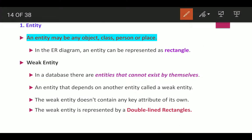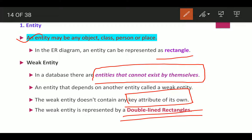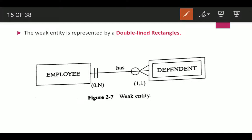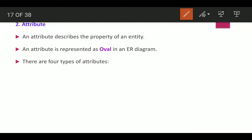An entity may be an object, class, person, or place. In an ER diagram, an entity is represented as a rectangle. A weak entity is any entity that cannot exist by itself — it depends on another entity and does not contain any key attribute of its own. Weak entities are represented by double-line rectangles. For example, a bank account cannot be uniquely identified without knowing the bank to which it belongs, so it is a weak entity.